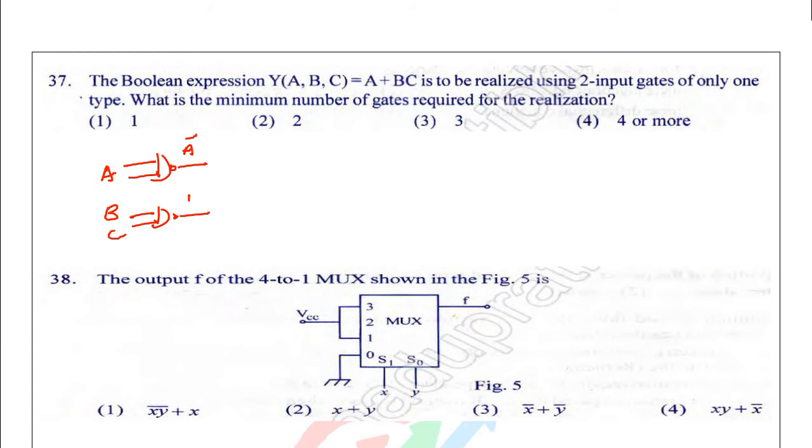If I give the same inputs to another NAND gate, I will get A plus BC. What is the minimum number of gates required for realization? One, two, three, so the answer is three.